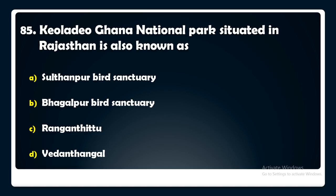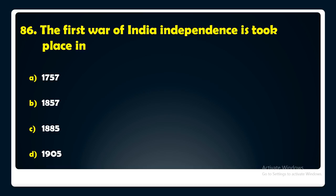The first war of Indian independence took place in — 1757, 1857, 1885, or 1905? The answer is: the first war of Indian independence took place in 1857.